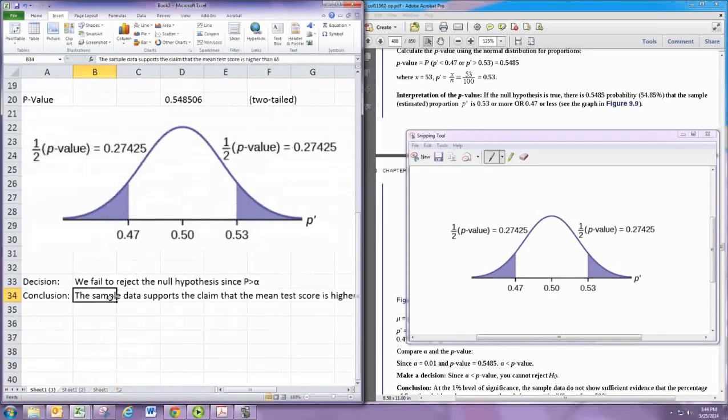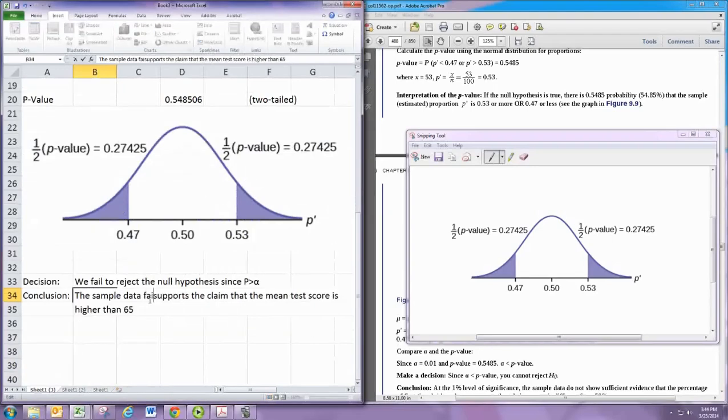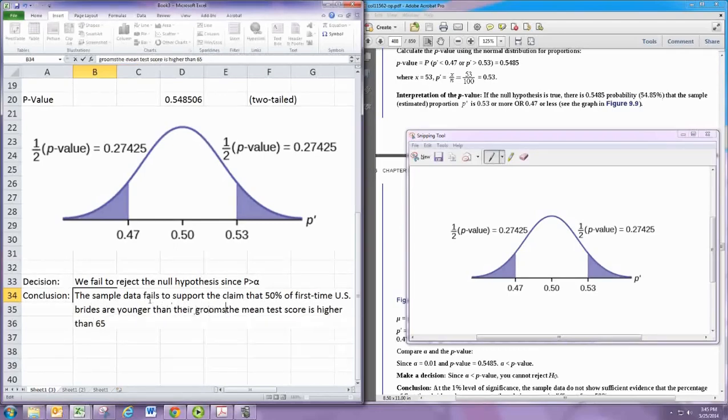And here we say that the sample data fails to support the claim. And the claim is kind of wordy here, that 50% of U.S. first time brides are younger than their grooms. That's what this whole test was about.